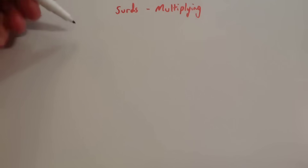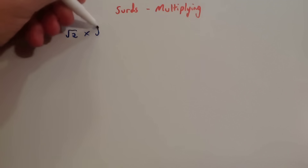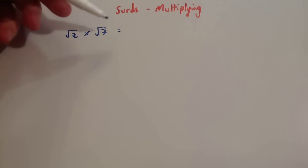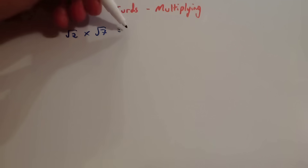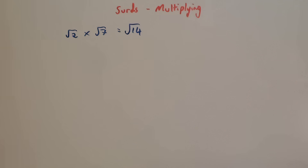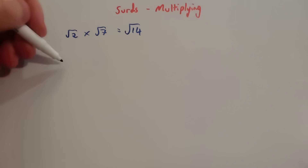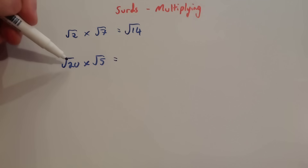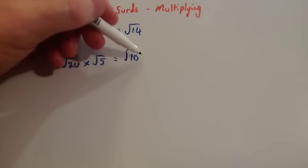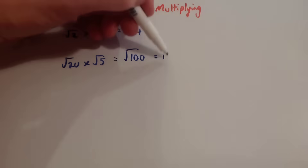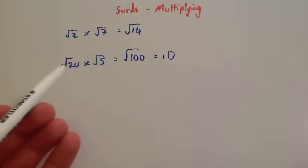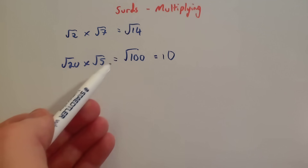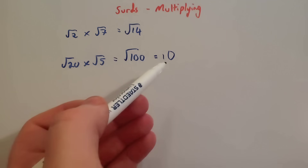Let's look at how to multiply surds. If you had root 2 times root 7, using the first law — root A times root B is root AB — you just do 2 times 7, which is 14, and you get the square root of 14. Now, root 20 times root 5: you times the numbers — 20 times 5 is 100 — so that would be the square root of 100. The square root of 100 is 10, because 10 is a square number. That's quite neat, because you've got two irrational terms, but when you multiply them together you get root 100, which gives you 10.